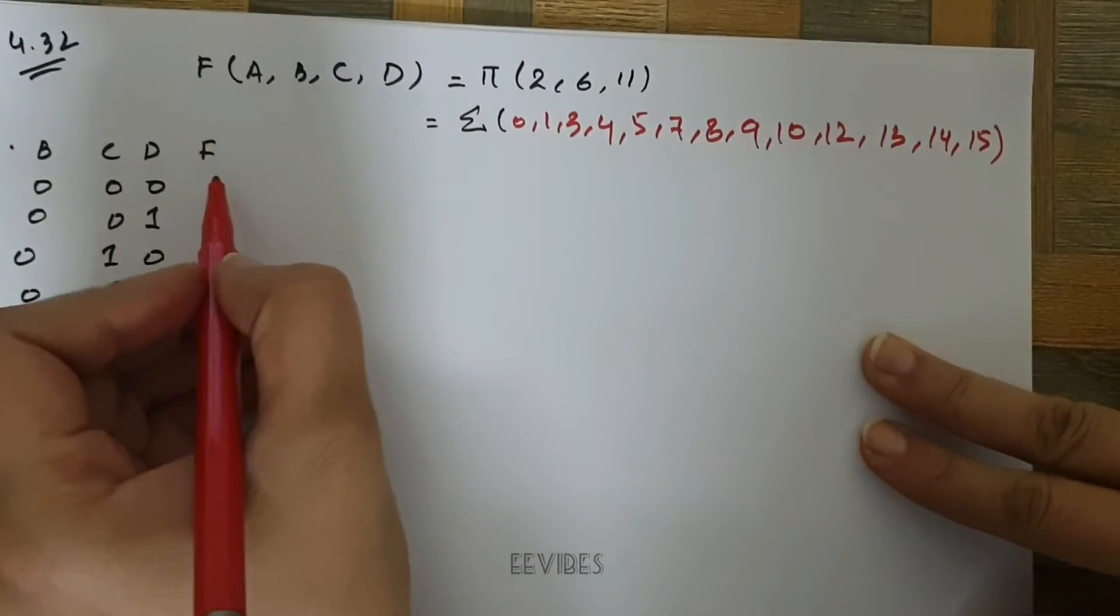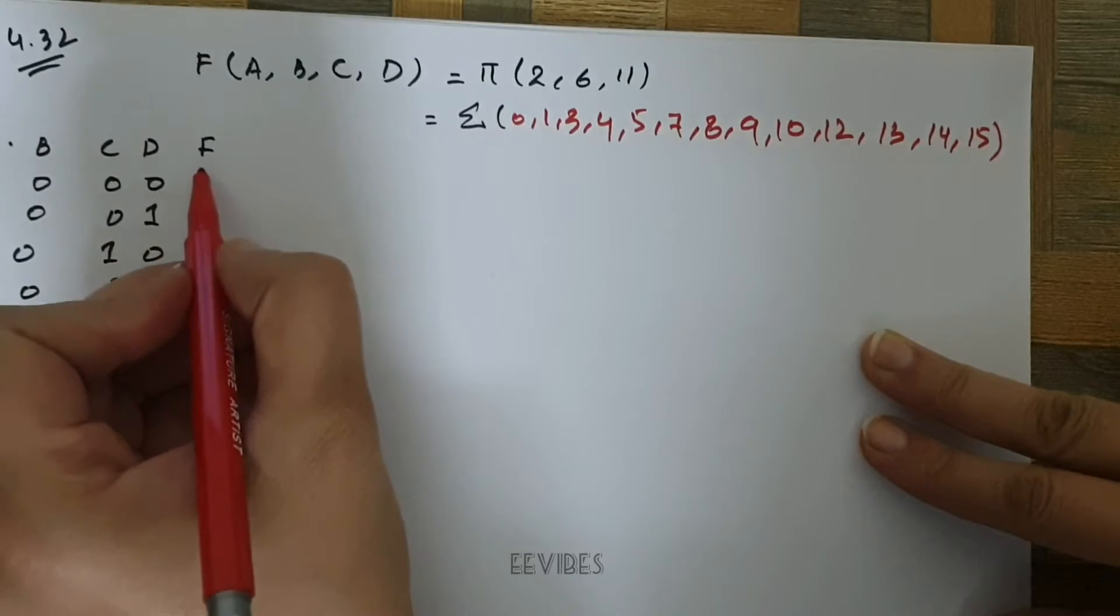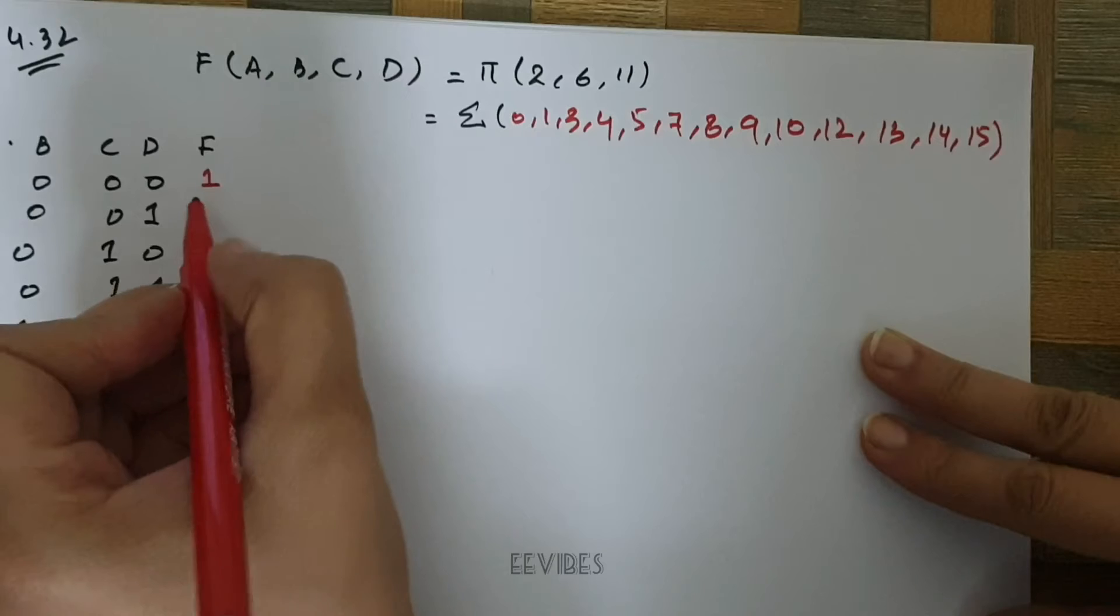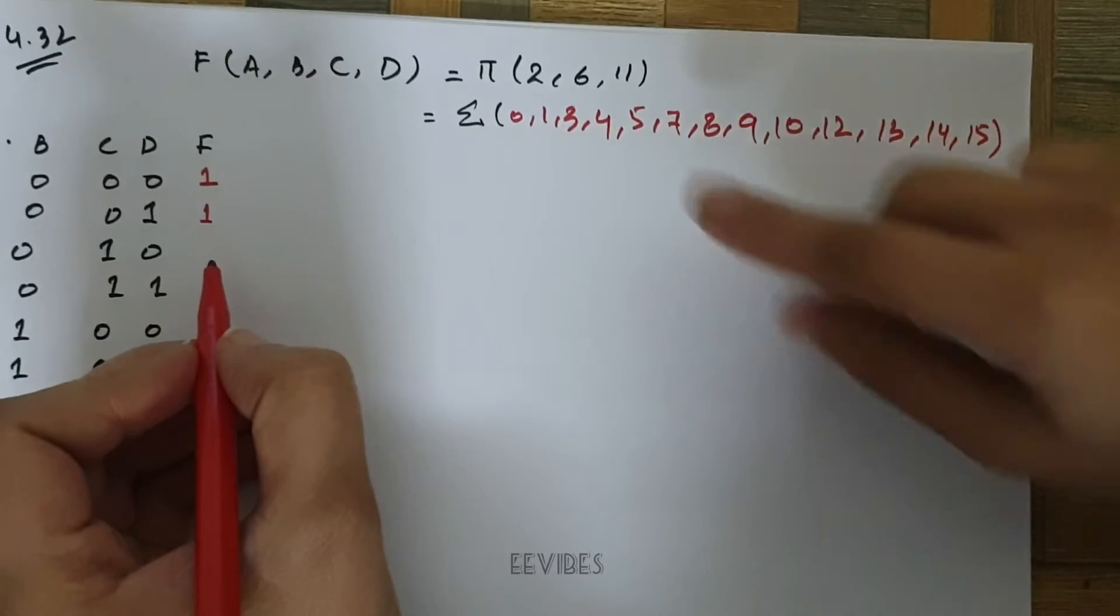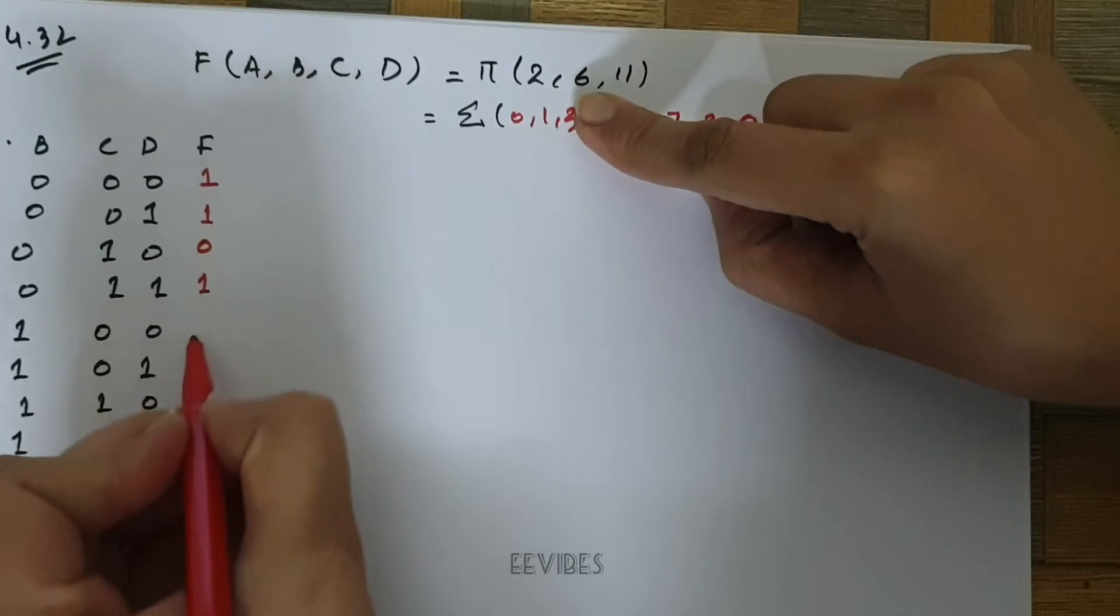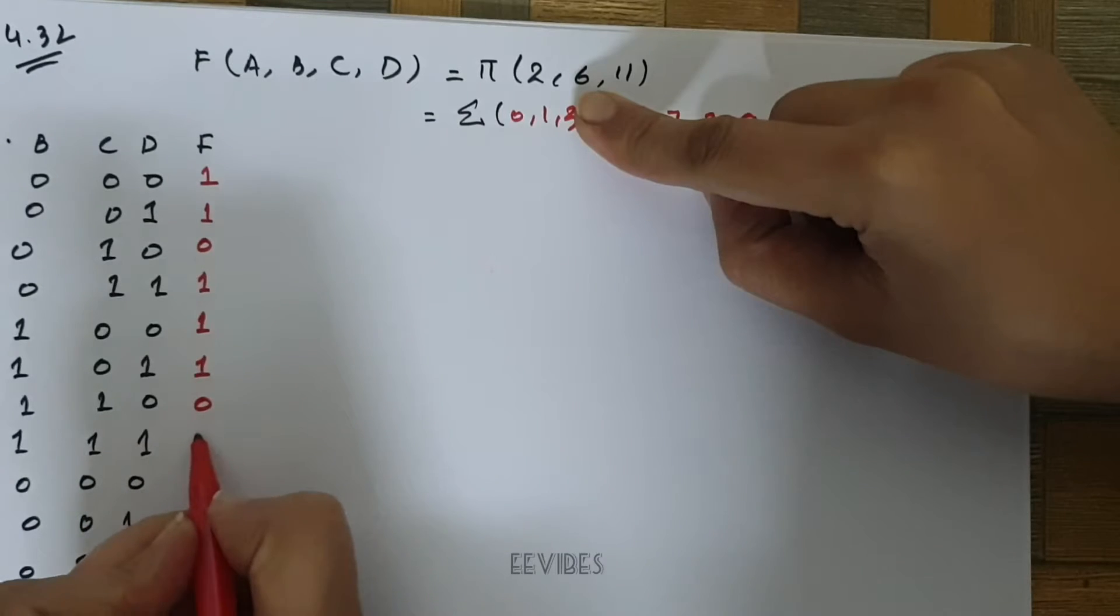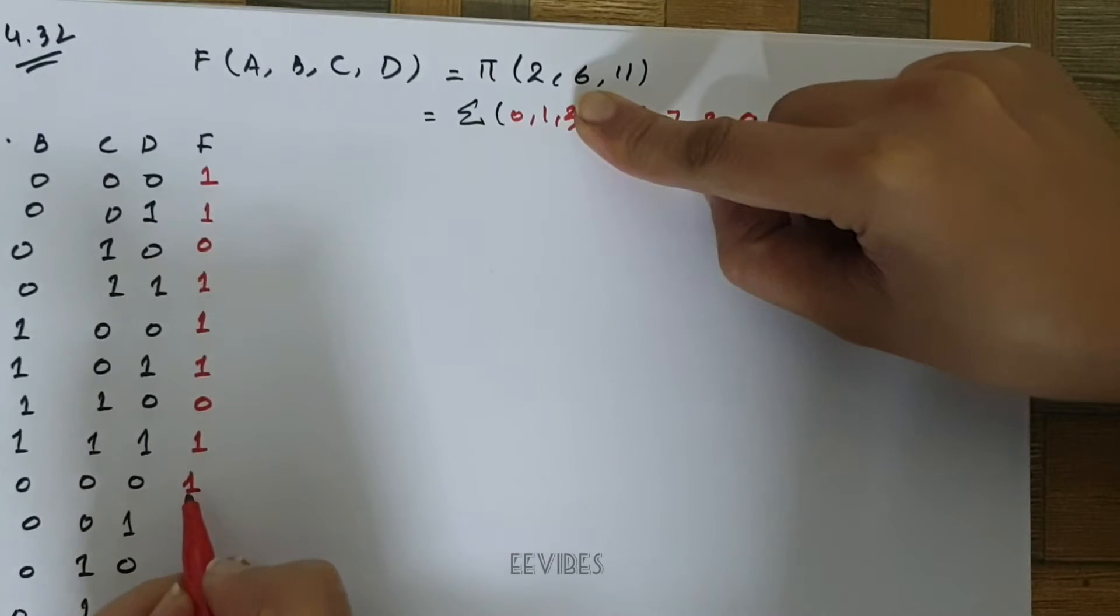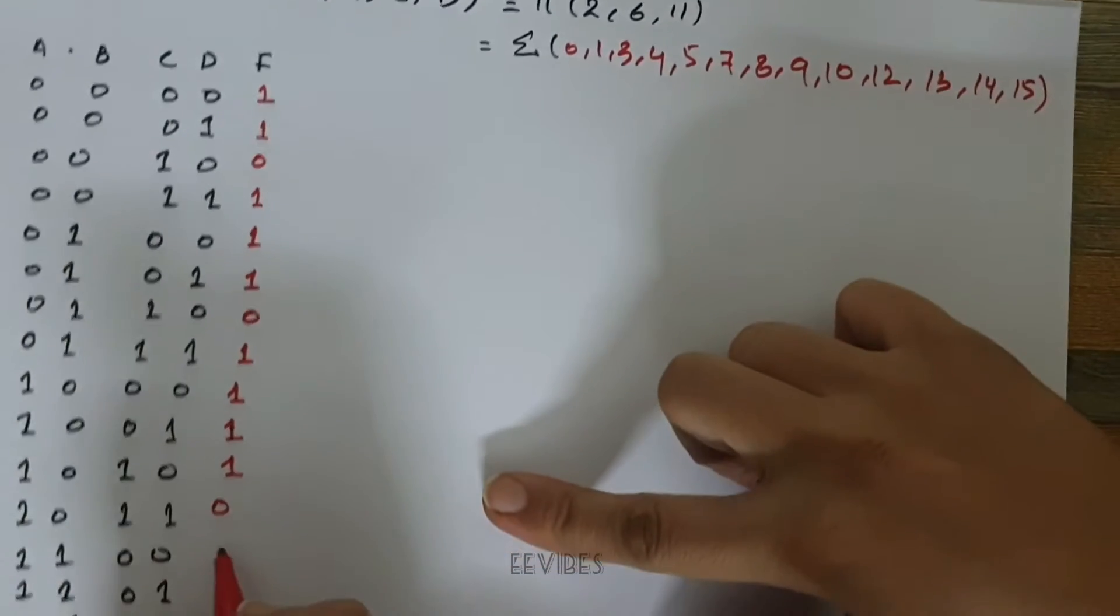value is equal to 1, while for the rest of the minterms its value is equal to 0. I will place 1 at the 0 minterm, then 1 again. For minterm 2 it will be equal to 0, for 3 it's 1, 4, 5, then 6, 7, 8, 9, 10, 11 it's 0.